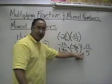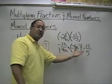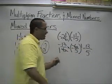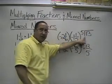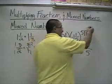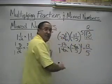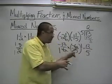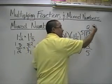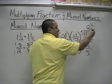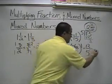Are we finished? No, because our answer 13 over 5 is an improper fraction, which means we must convert it back to a mixed number by division. We do 13 divided by 5. How many times does 5 go into 13? 2 times. 5 times 2 is 10, and 13 minus 10 is 3. That 3 becomes the numerator of your new fraction, and you keep 5 as your denominator. So 13 over 5 becomes 2 and 3 fifths.